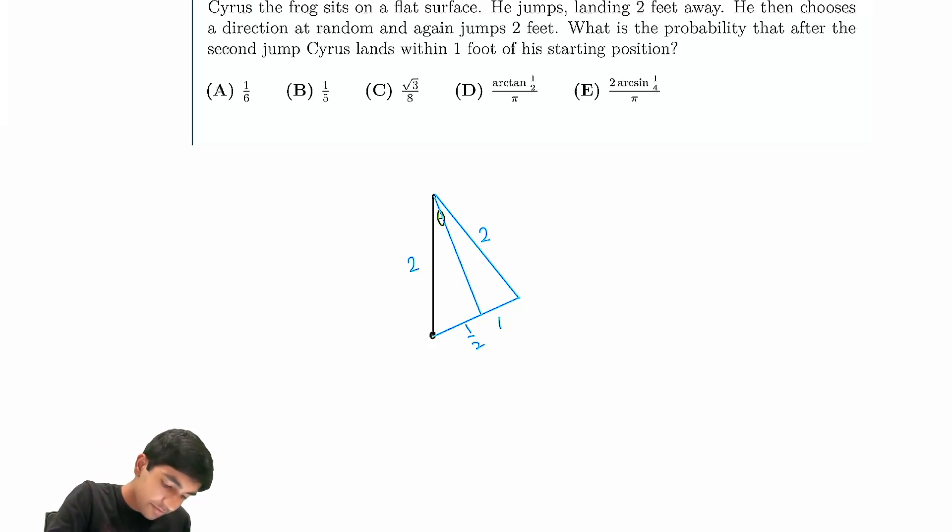That's half. And then now see, this is theta over two. So we have theta over two equals inverse sine of one half by two, which is one fourth. So theta is just two sine, two arc sine one fourth. So that's the value of theta over here.